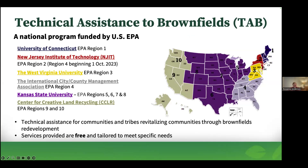KSU TAB is originally funded by the U.S. EPA. It is a technical assistance program designed to help the redevelopment and assessment of Brownfields that have become stagnant. This program started about 25 years ago and covers four U.S. EPA regions: five, six, seven, and eight. We are also the national TAB, covering projects throughout all 10 regions. All of our services are free since they are federally grant funded.